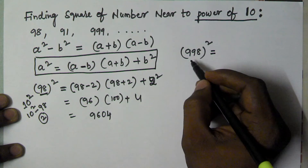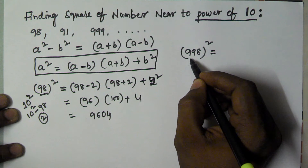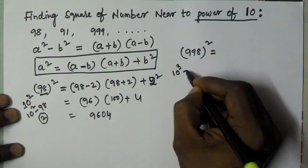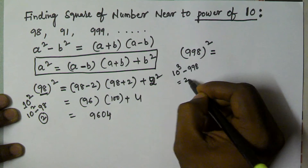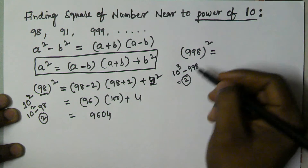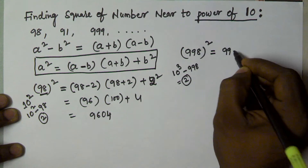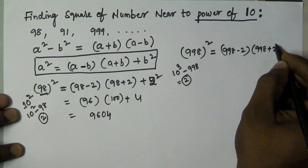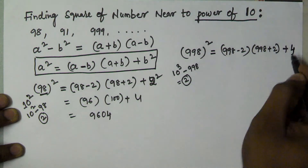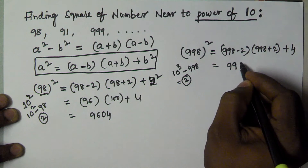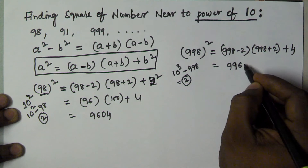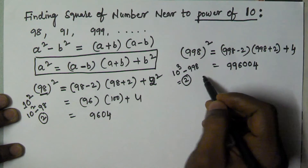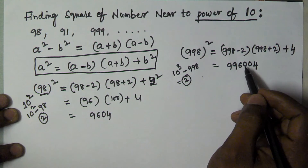Now let's find 998 squared. Here a = 998 and b = 2 (since 1000 minus 998 = 2). So (a minus b) = 998 minus 2 = 996; (a plus b) = 998 plus 2 = 1000; and b² = 4. So 998² = 996 × 1000 + 4 = 996004.